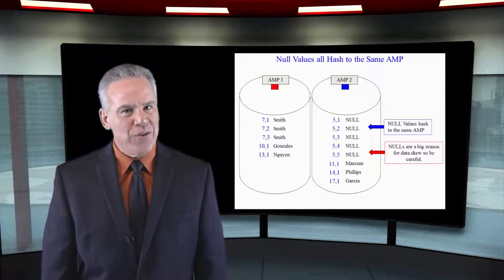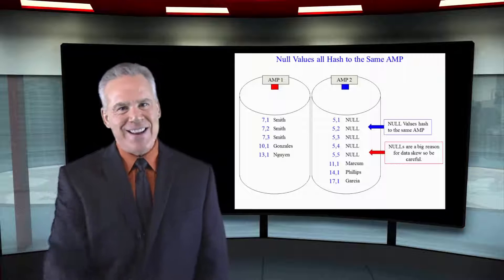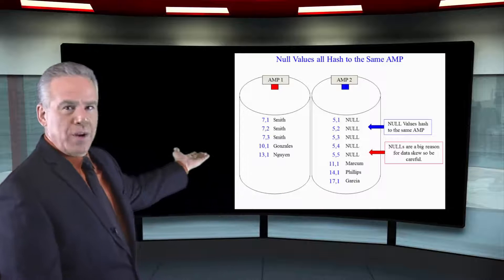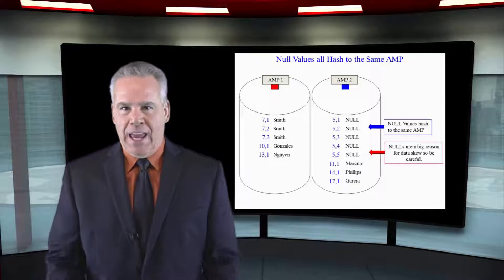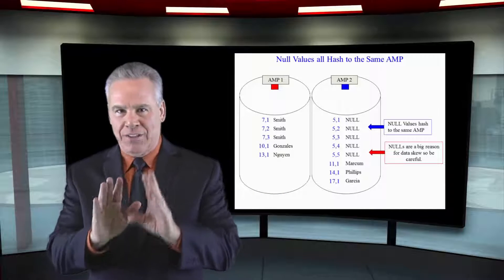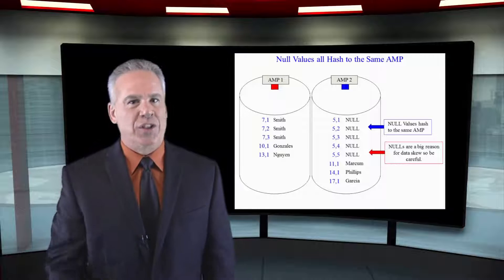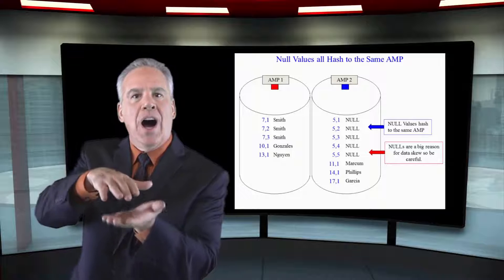Can you have null values in your primary index? Unfortunately, you can. In this case, we've got a primary index of last name. And notice all of the last name values that were null went to the same amp. This can really cause what's called a hot amp. There's a lot more rows on this amp than in the other amp.